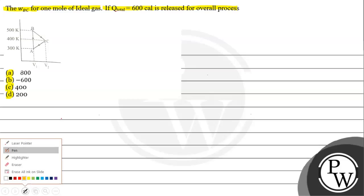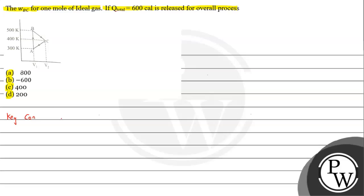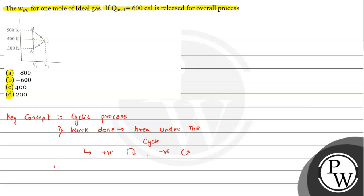To understand this question we need to understand the concept of the cyclic process. As a key concept: for a cyclic process, work done is the area under the cycle. We need to take the area under the cycle carefully — it will be positive if the cycle is clockwise, and negative if the cycle is anticlockwise. Work done is a path function because it depends on the path.